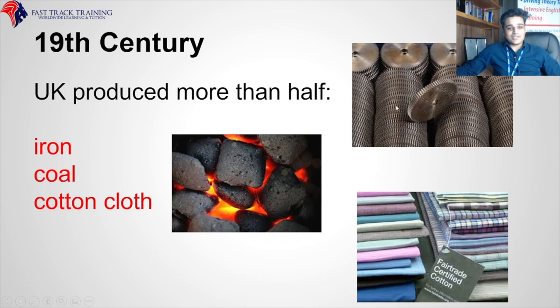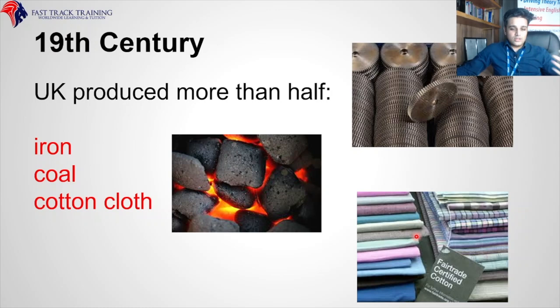The only thing really in the test regarding production is what the UK produced in the 19th century: iron, coal, and cotton cloth. They pulled loads of coal out of the ground, made loads of iron, and made loads of cotton cloth — which also destroyed the Indian cloth industry during the Industrial Revolution.